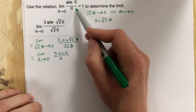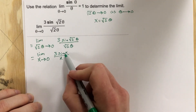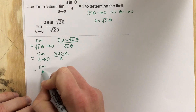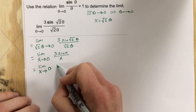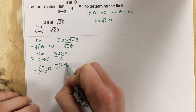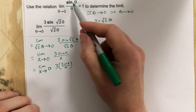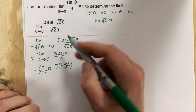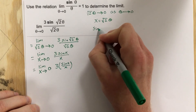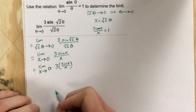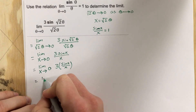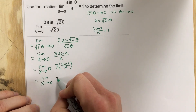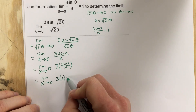You should be noticing that sine theta over theta equals 1 — we're getting close there, we have sine x over x. So we can write that as 3 times sine x over x. We know that sine x over x is also equal to 1, since x is standing for theta in this case. So we end up with the limit as x approaches 0 of 3 times 1, which equals 3.